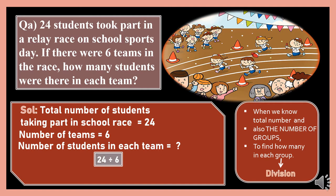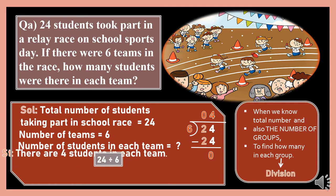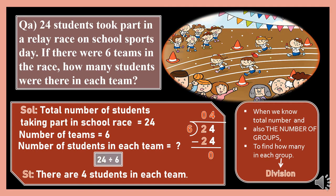So 24 is to be divided by 6. We can do it the short way — we know in the 6 times table, 6 fours are 24. We can also use the long division method. 24 divided by 6: 2 is smaller than 6, so 0 times, then we take 24 altogether. 6 fours are 24, subtract, nothing remaining. So the answer is 4. There are 4 students in each team. This is the first condition: when we know the total number and the number of groups, to find how many in each group, we use division.